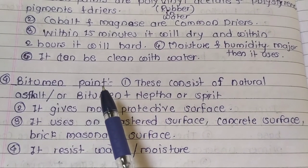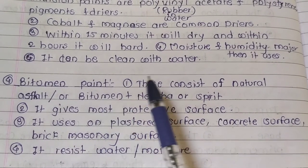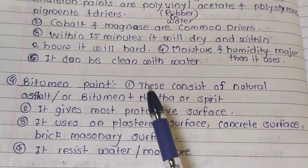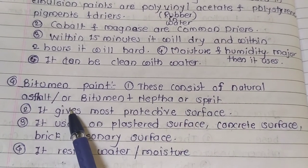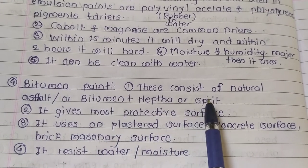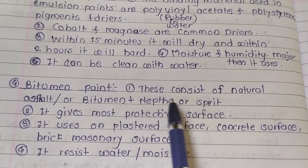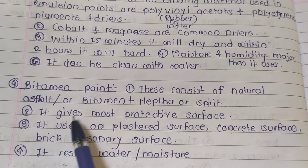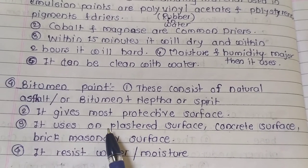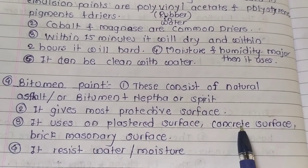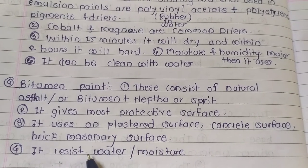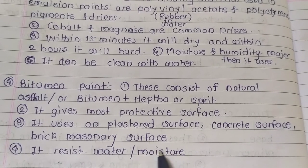Bitumen paint is the most protective paint. It consists of natural asphalt or bitumen, and naphtha or spirit. It gives the most protective surface and is used on plastered surfaces, concrete surfaces, and brick masonry surfaces. It resists water and moisture.